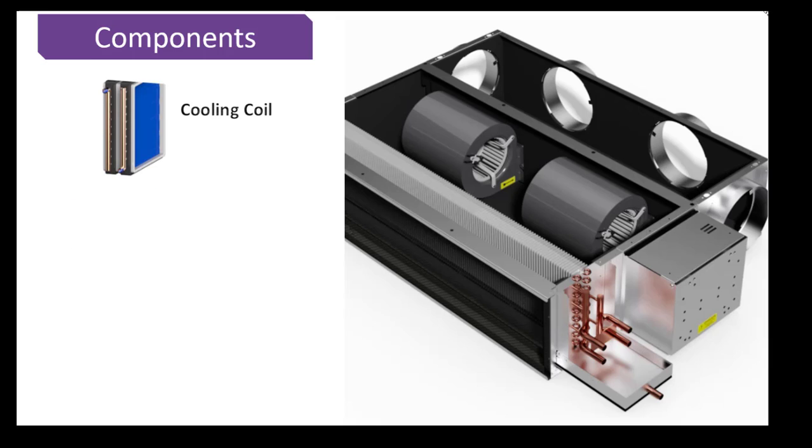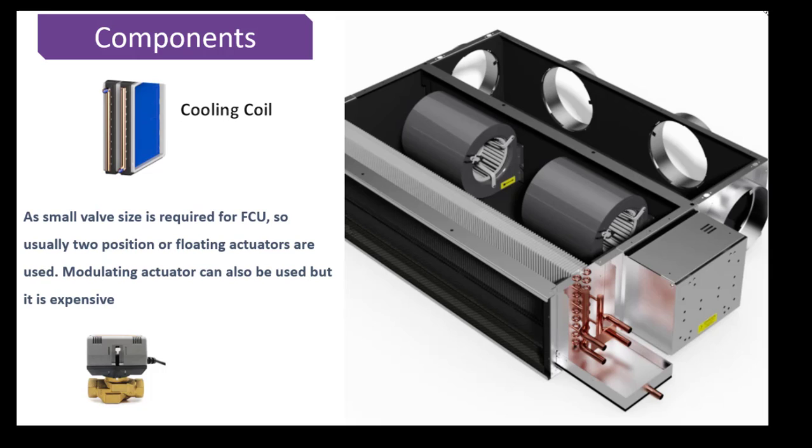Then we have a cooling coil which is used to cool down the air. A motorized valve is used to control the amount of chilled water supplied to the coil. A small valve size is required for FCU so usually two position or floating actuators are used. Modulating actuator can also be used but it is expensive. In my previous video I discussed about the valves and actuators in details so you can have a look at that video also. I will give the link in the description.